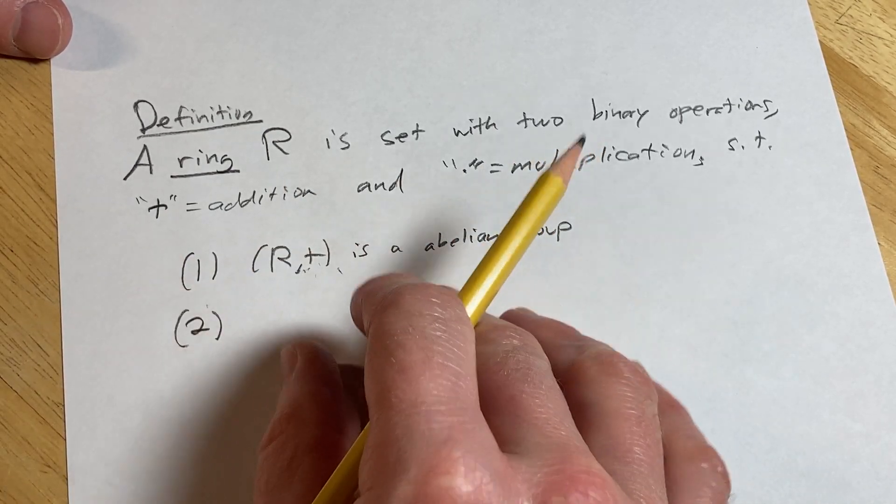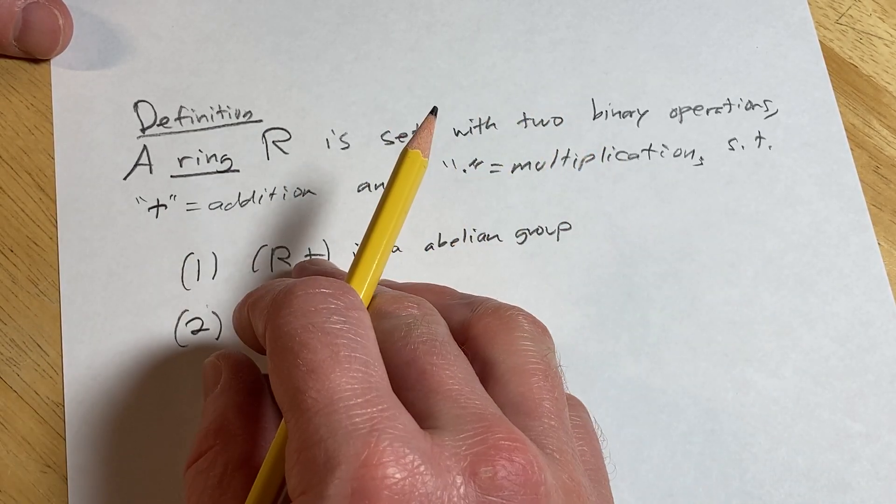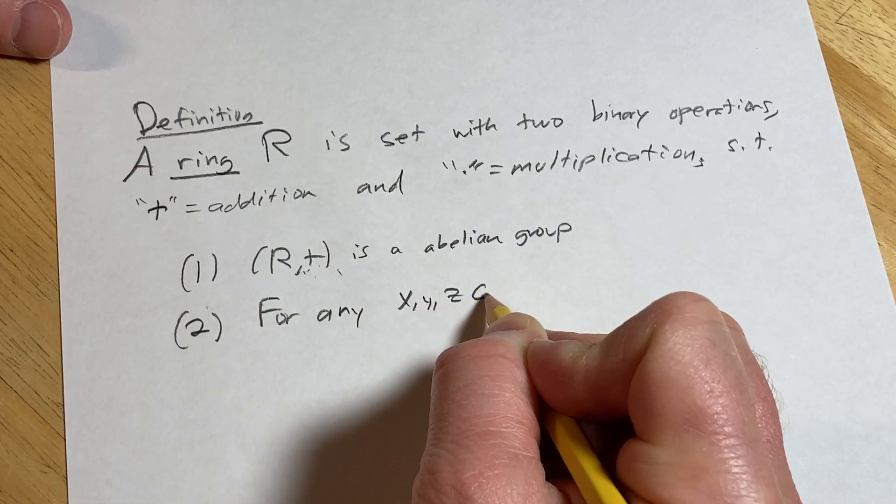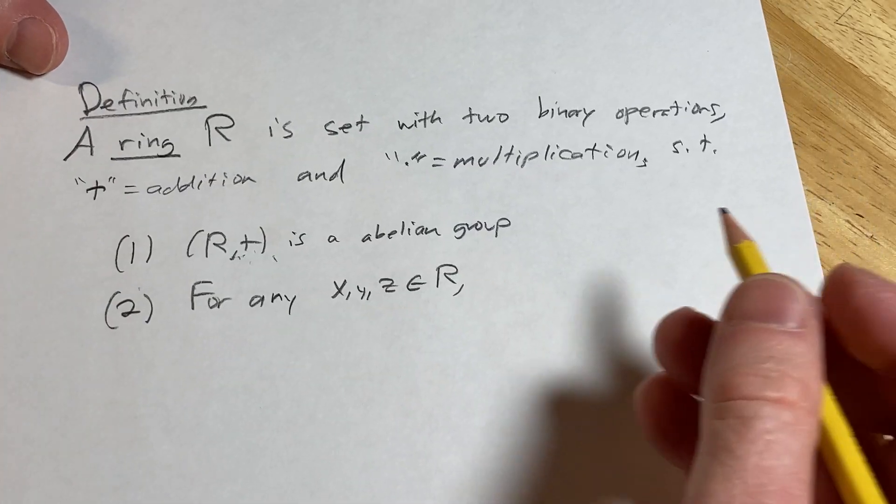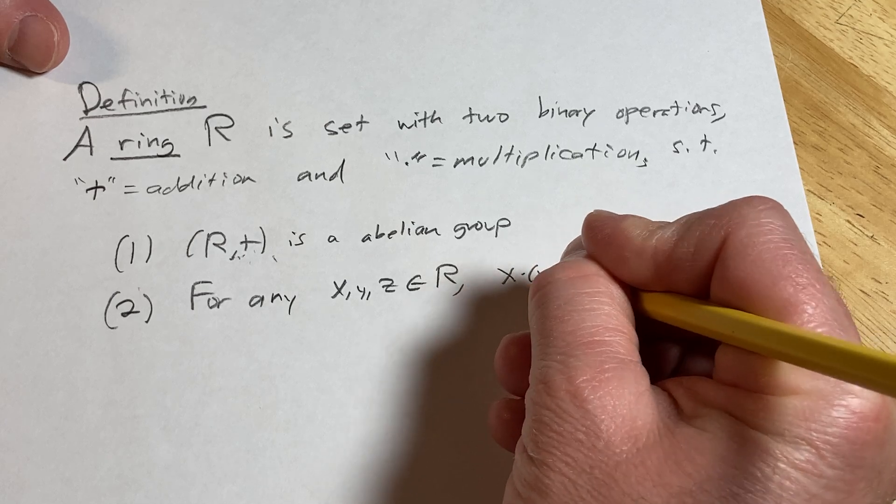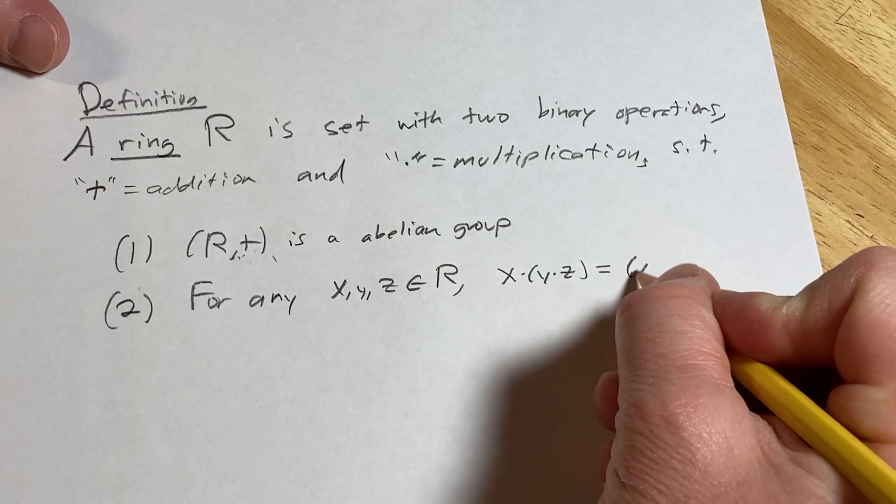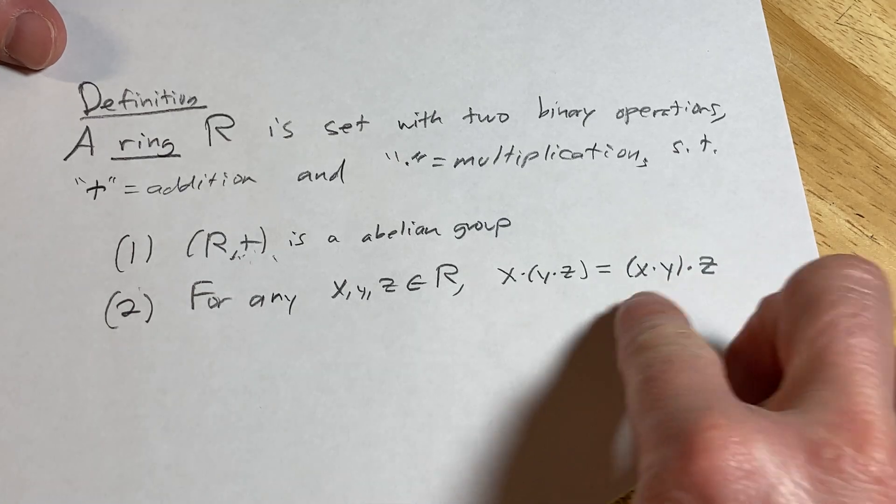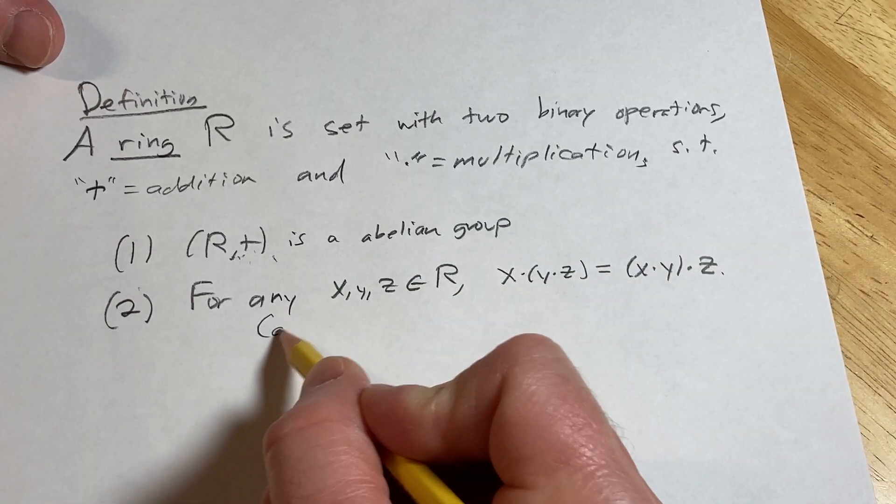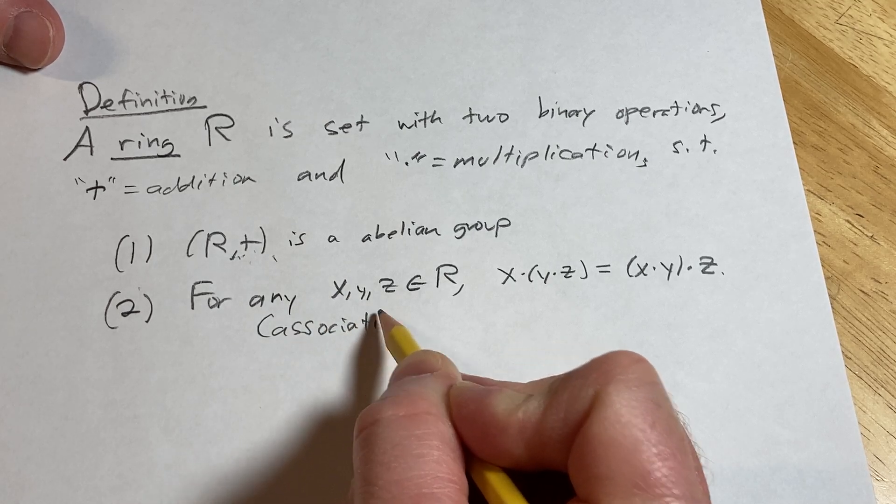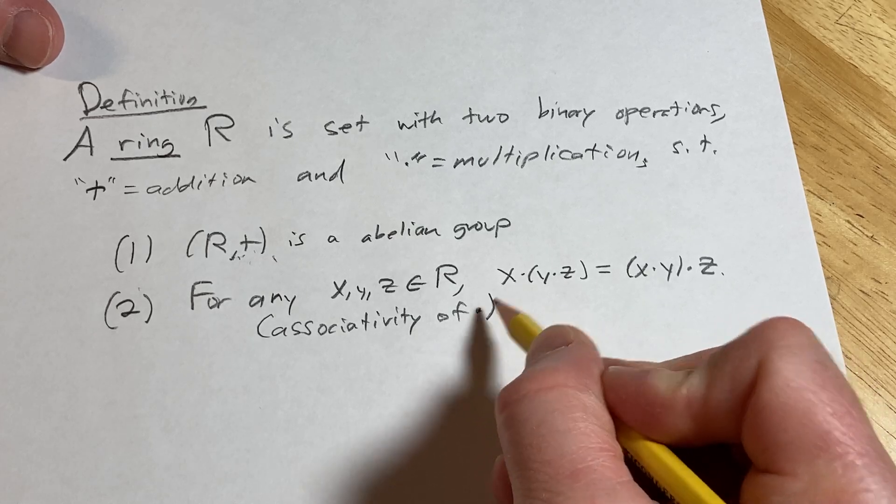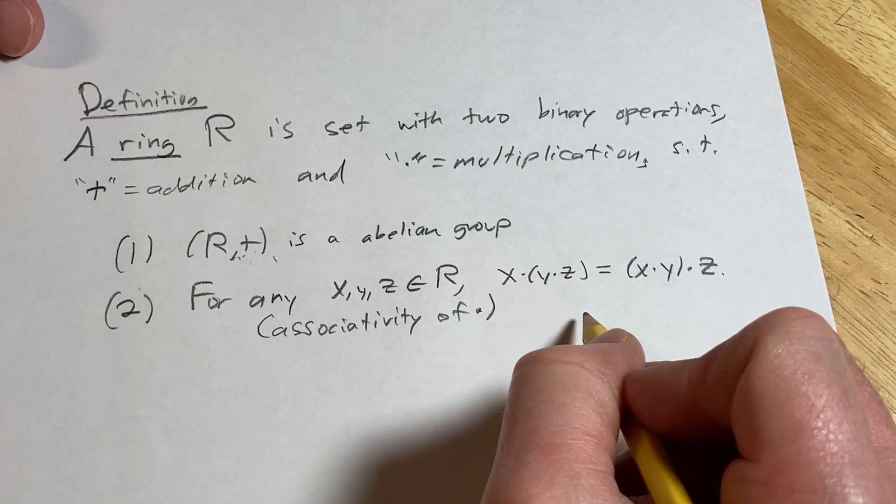Two: you need to have associativity under multiplication. So for all X, Y, Z in R, we have associativity of multiplication. So we have that X times (Y times Z) is equal to (X times Y) times Z. Or you can write this one first, it doesn't matter. So this is associativity of multiplication. So the multiplication is associative, very important.